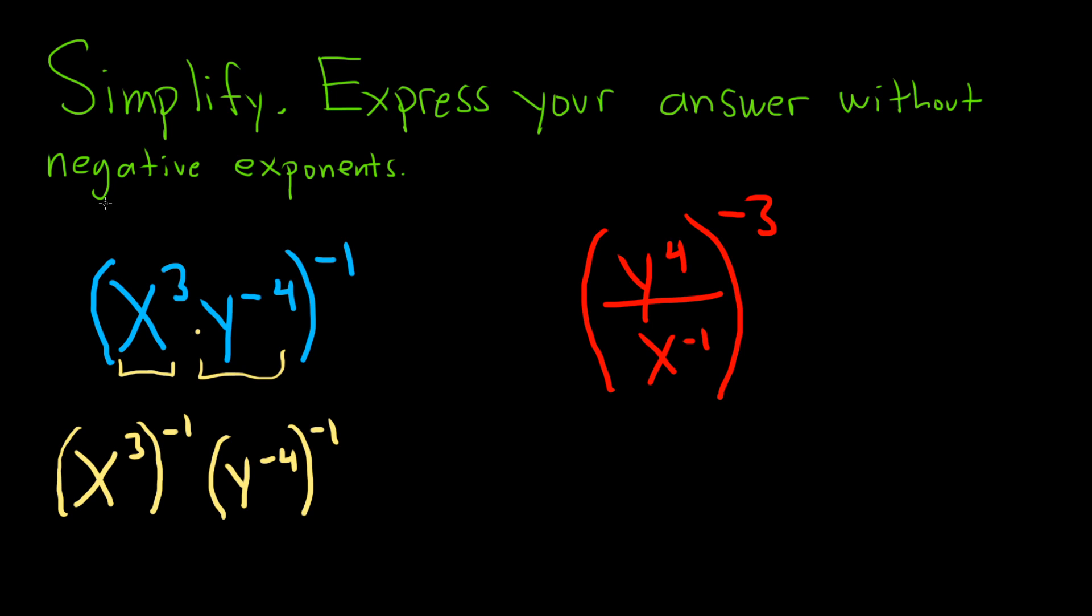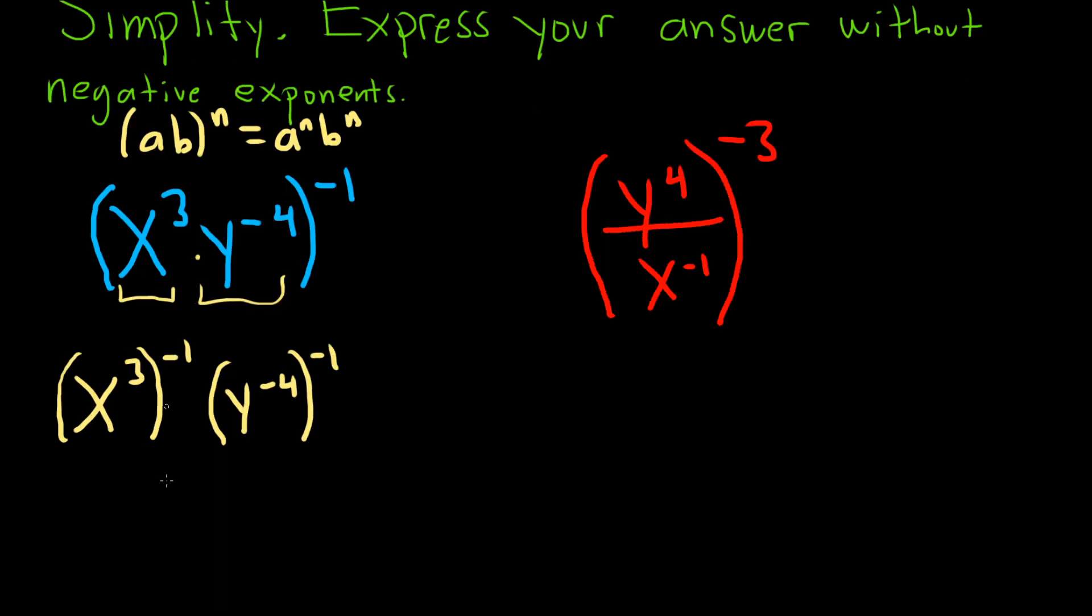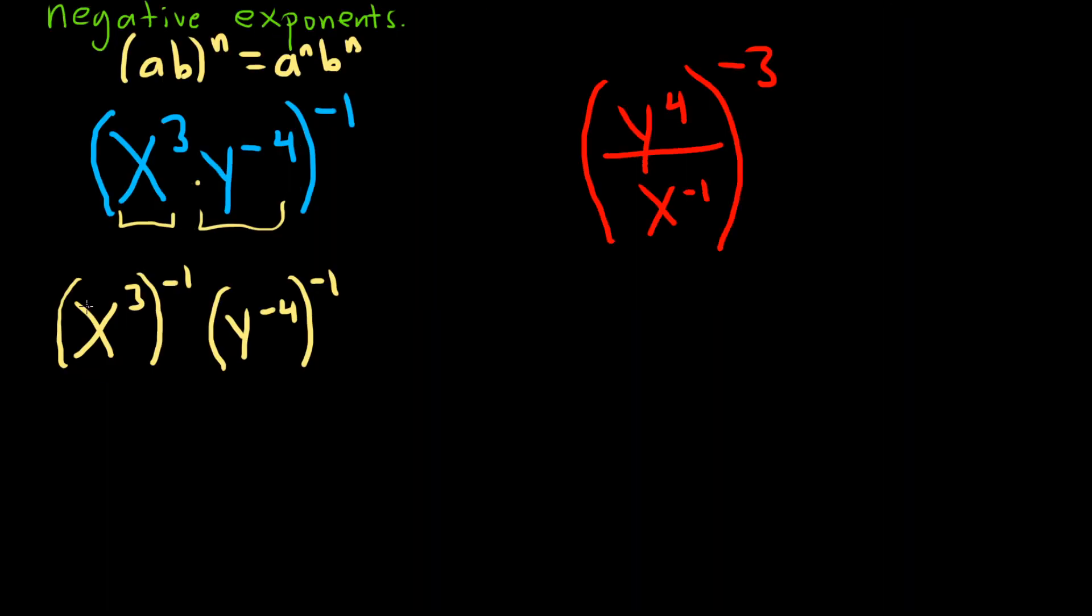Just for reference, the rule is if you have say a, b to the n, that's a to the n, b to the n. That's the rule that we're using there. This next rule says that whenever we have something to a power to a power, we multiply the powers.